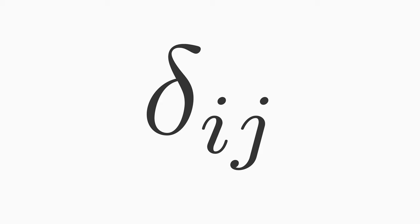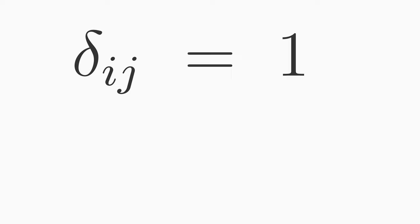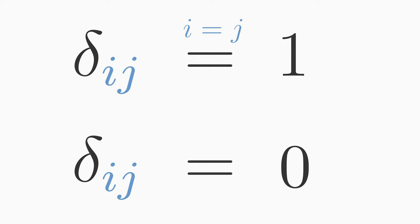Kronecker delta ij is a small Greek letter delta which yields either 1 or 0, depending on which values its two indices i and j take on. The maximal value of an index corresponds to the considered dimension, so in three-dimensional space i and j run from 1 to 3. Kronecker delta is equal to 1 if i and j are equal, and Kronecker delta is 0 if i and j are not equal.